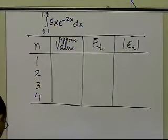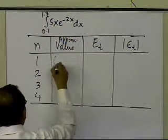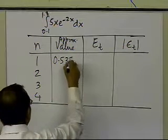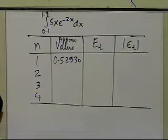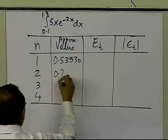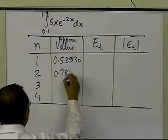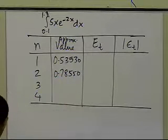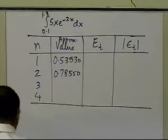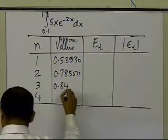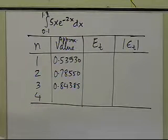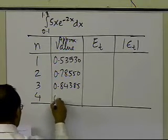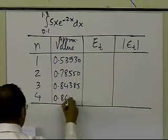Let's go ahead and see what kind of approximate values I am getting. When I had 1 segment, I got 0.53530. When I had 2 segments, I got 0.78550. And when I had 3 segments, which I just calculated, I got 0.84385. And if I was going to do this problem with 4 segments, I'll get 0.86535.